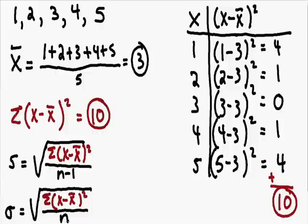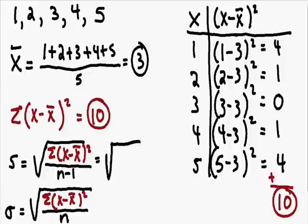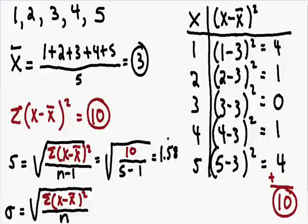Many people get confused about which formula to use. Let's say the numbers 1, 2, 3, 4, 5 represent a sample from a larger population. If it's a small sample from a large population, we use the sample formula. Plugging in, the standard deviation is the square root of 10 divided by (n minus 1), which is (5 minus 1). Rounding to two decimal points, we get 1.58. So the standard deviation for a sample would be 1.58.